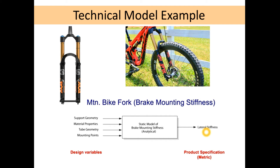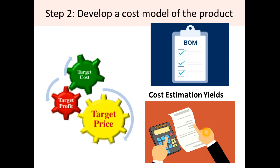Step two is to develop a cost model of the product. The main aim here is to determine whether we can achieve the target price, which covers the actual manufacturing cost and the profit we want to make. This target price must be competitive enough for the business environment. This is achieved by creating a bill of materials — listing all physical components required, their quantities, and the materials needed.